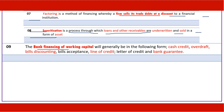Bank finance of working capital may take different forms: it may be a cash credit facility, bank overdraft, bills discounting, bills acceptance, line of credit, letter of credit, or bank guarantee.